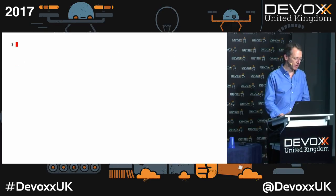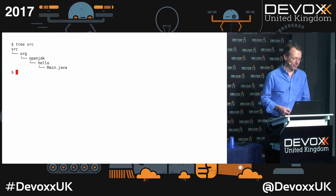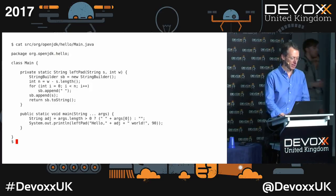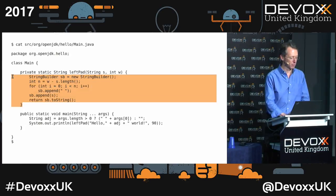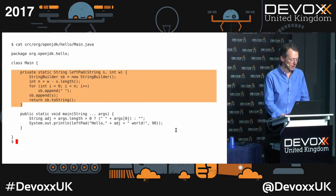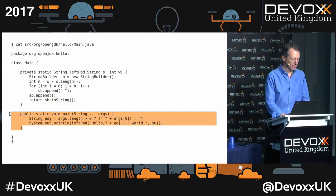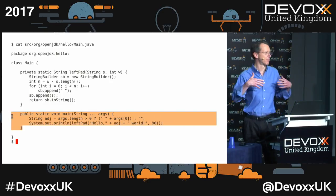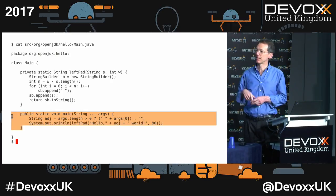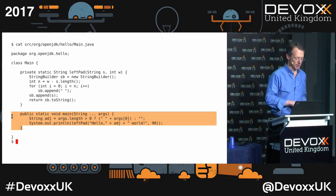To start off, I have a really trivial application — Hello World, the original. It's a little bit different though. Inspired by our brethren in the land of JavaScript, we have a left-pad method here. The main method takes some input, constructs a Hello World string, left-pads it, and prints it out. Pretty simple.